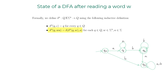Let's see this in action. Starting at q naught, feeding the DFA the word 'aba': delta star of q naught comma aba equals — applying the inductive step — delta of delta star of q naught comma ab, comma a. Then I apply the inductive step again on the inner delta star, arriving at delta of delta star of q naught comma a, comma b.